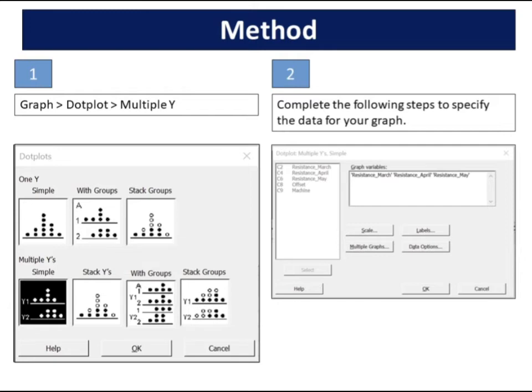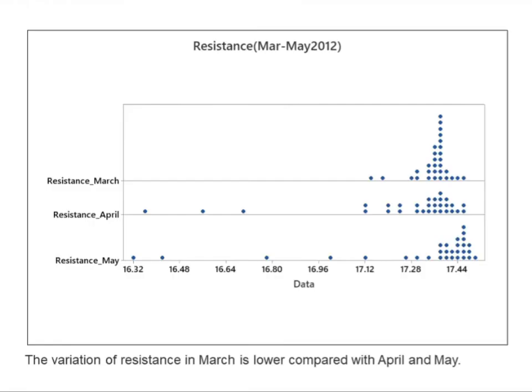In graph variables, enter resistance March, resistance April, resistance May. Click OK. In summary, the variation of resistance in March is lower compared with April and May.